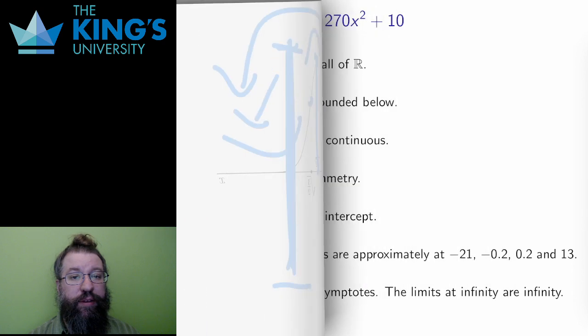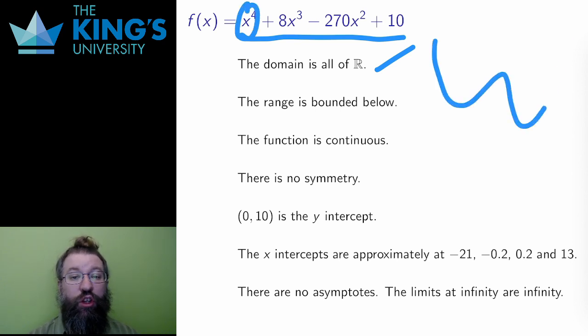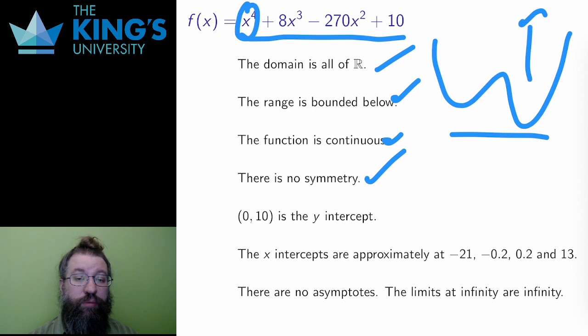Here's the second example for the video. This is a polynomial, so the domain is all reals again. This is a quartic with positive first component, so I expect an upward-opening usual W shape of a quartic. That means the range will be bounded below and unbounded above. The function is continuous, which I get for free since it is not piecewise. There is no symmetry. If I put negative x into the function, the result is neither the same function nor negative 1 times the whole function.